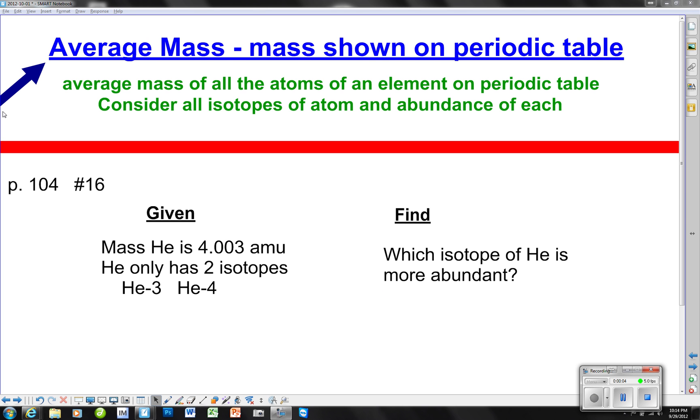The average mass of any element is the mass shown for that element on the periodic table. That average mass considers all isotopes of the atom and their abundance.